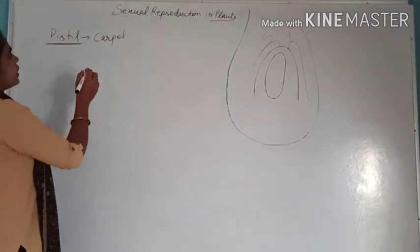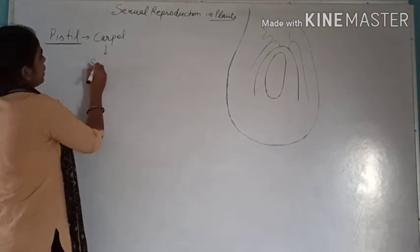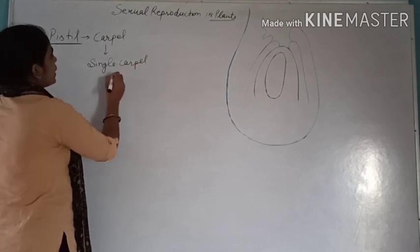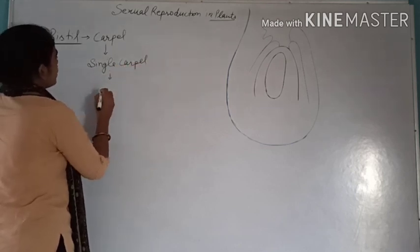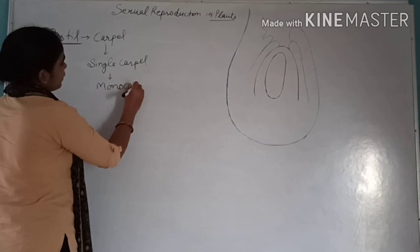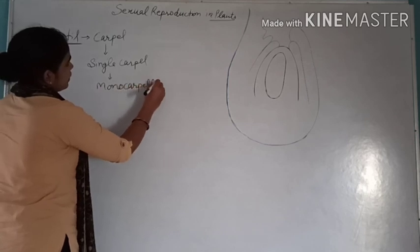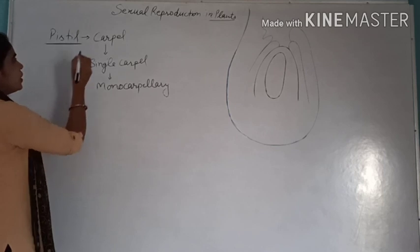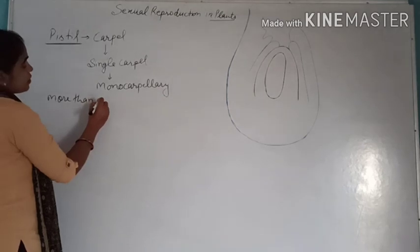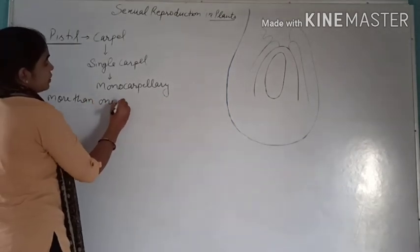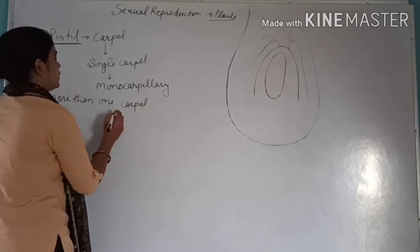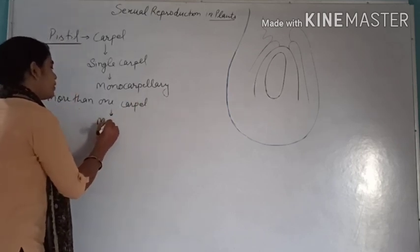If in a flower there is a single carpel, then what do we say? We call it monocarpillary. And if the carpels are more than one, in that case we will call that multicarpillary.